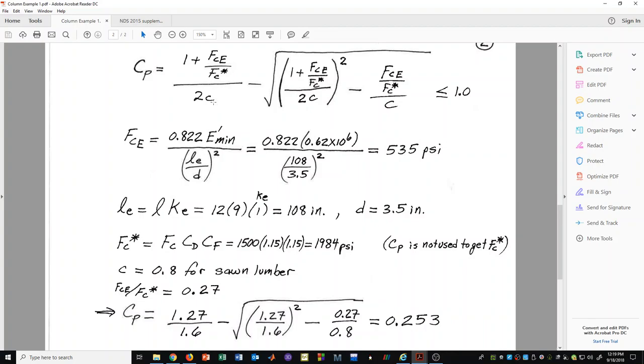Then we are ready to put in that value into our formula and also C. So putting all of those things in, we get 1.27 over 1.6 minus the square root of 1.27 over 1.6 squared minus 0.27 over 0.8. We get a C sub P value of 0.253.